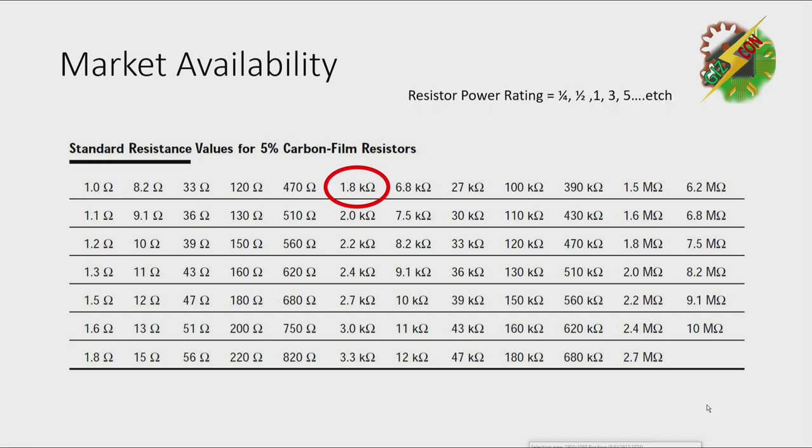After that, we also need to consider the power rating. The power rating of a resistor is about one fourth, one half, one, three, five, and etc.